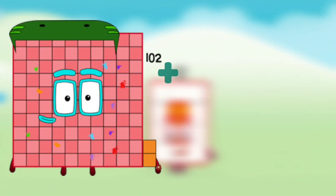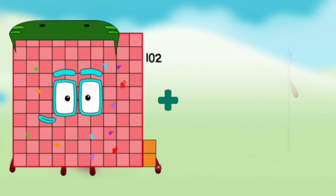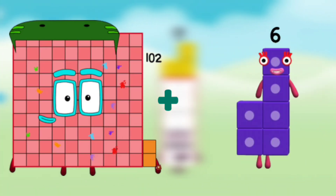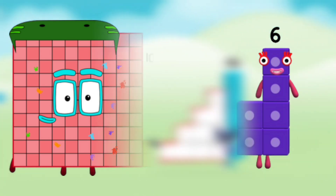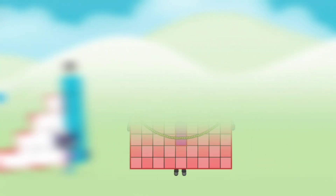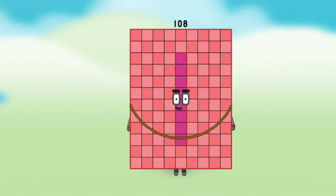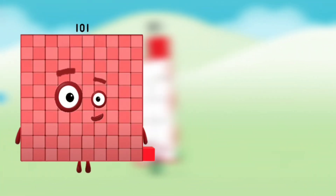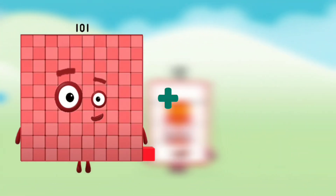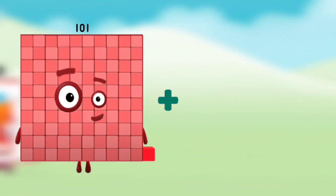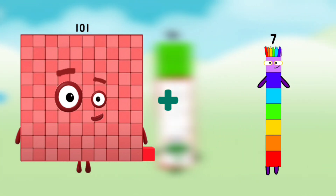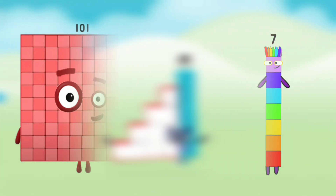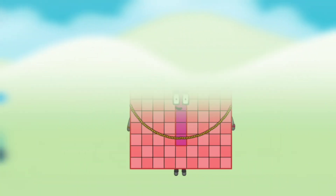Number blocks 102 plus number block 6 equals number blocks 108. Number blocks 101 plus number block 7 equals number blocks 108.